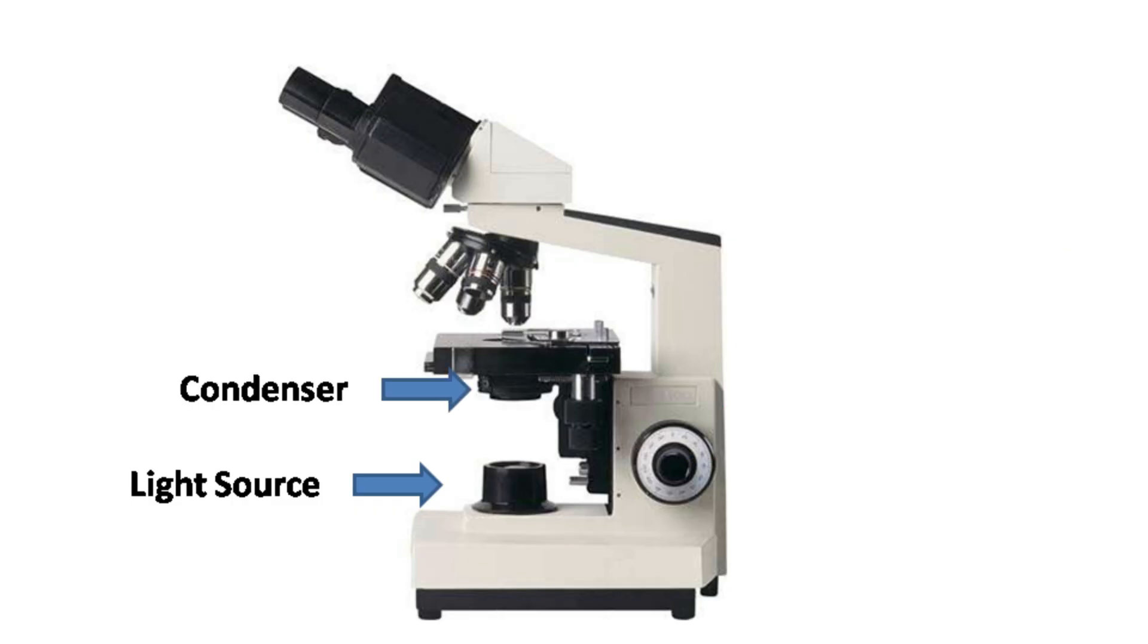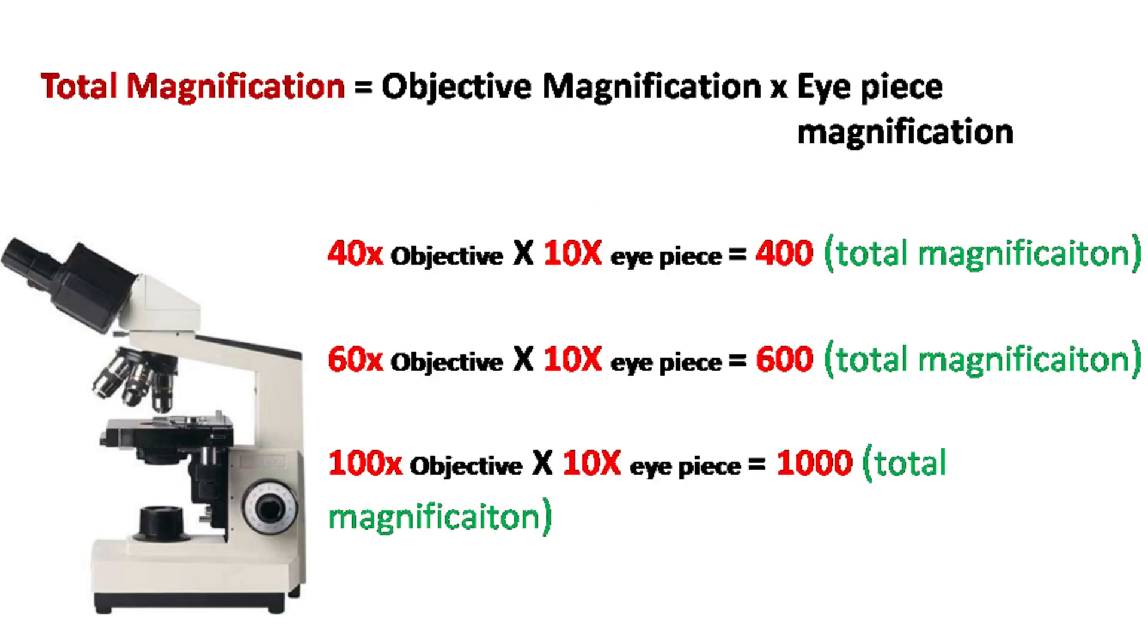The condenser collects the light from the light source and directs the light to the specimen which is kept on the stage. The light passing through the specimen is collected by the objective lens and the final magnification is created by the eyepiece. The total magnification of the specimen observed is the product of magnification of the objective and the magnification of the eyepiece.